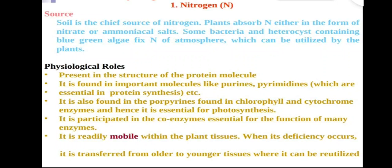The key macronutrients are classified as primary and secondary. The primary nutrients are NPK — nitrogen, phosphorus, and potassium. Nitrogen is the first primary nutrient. Soil is the chief source of nitrogen. Plants absorb nitrogen either in the form of nitrate (NO3-) or ammonical salts (NH4+).